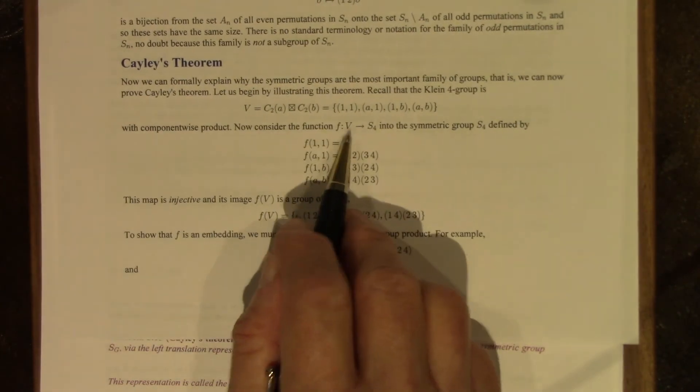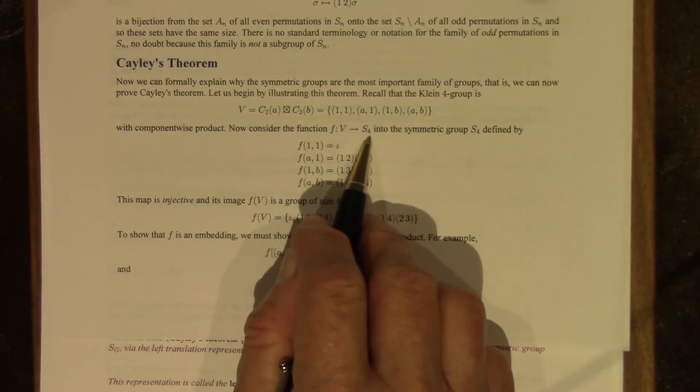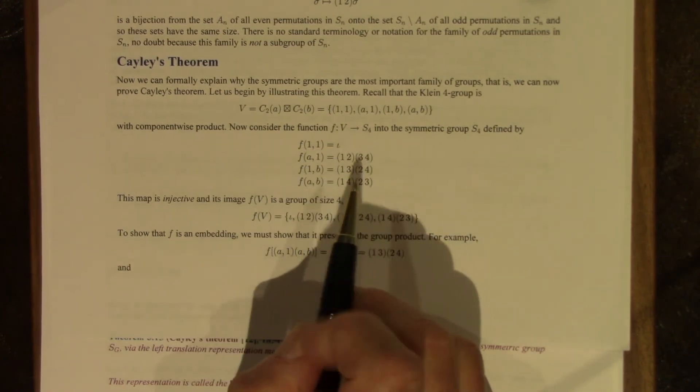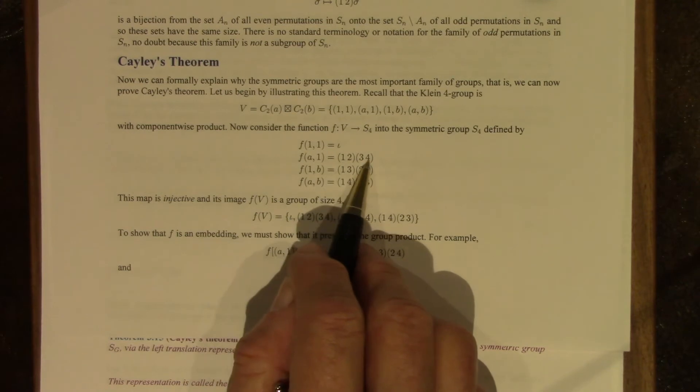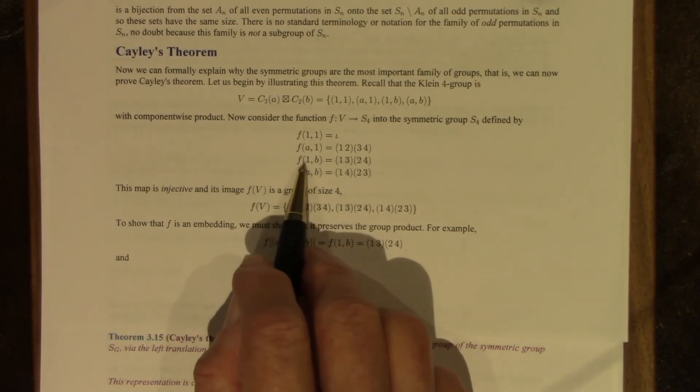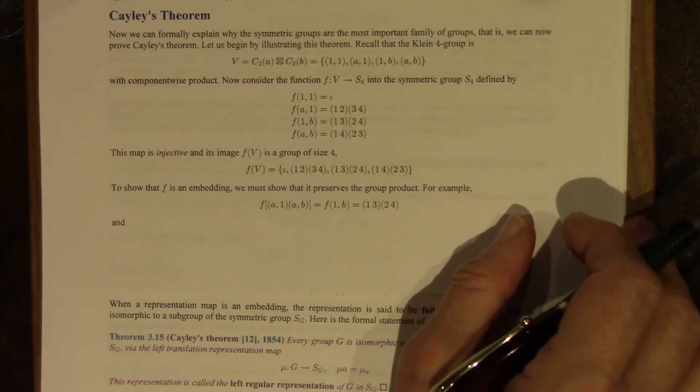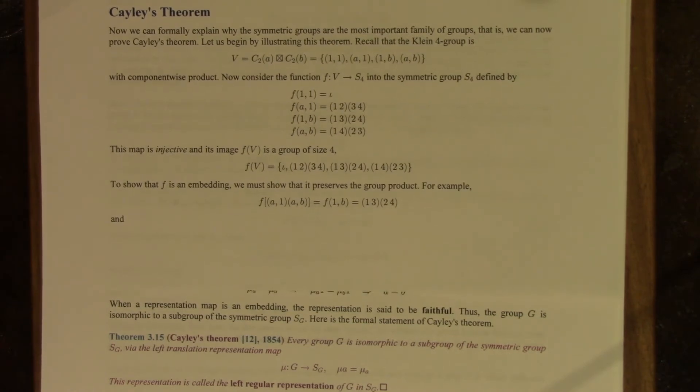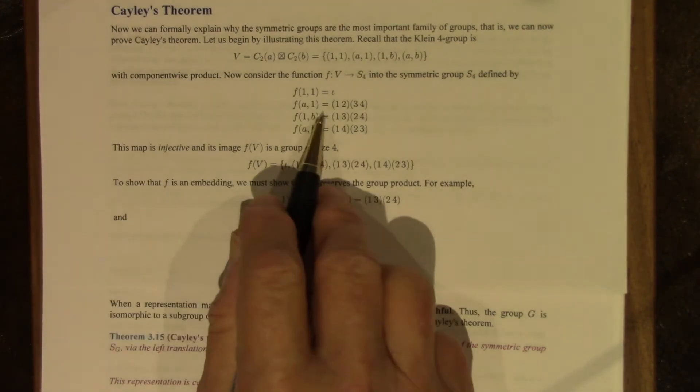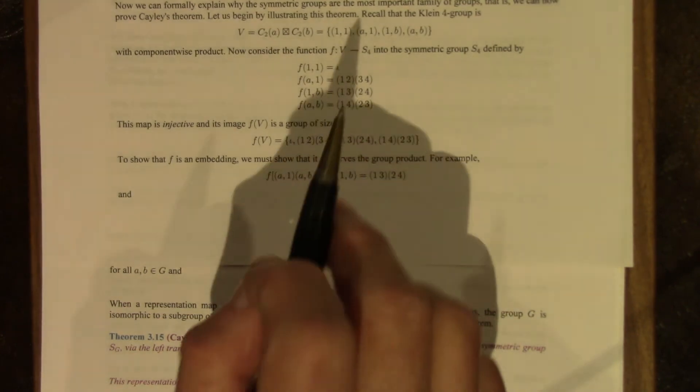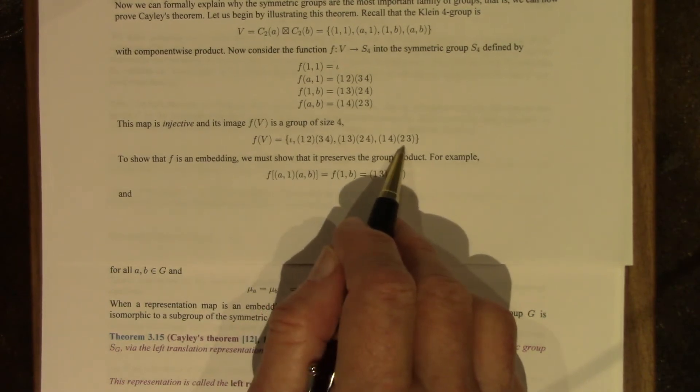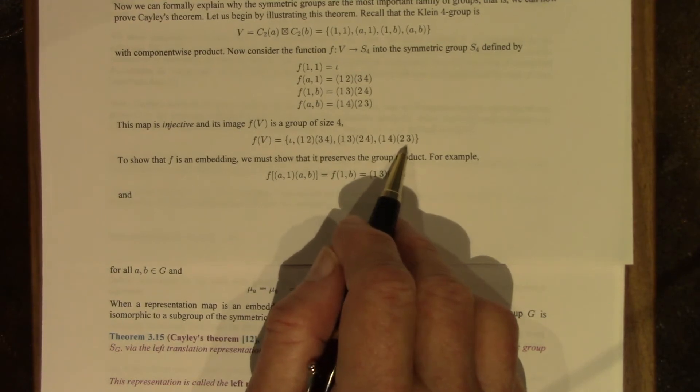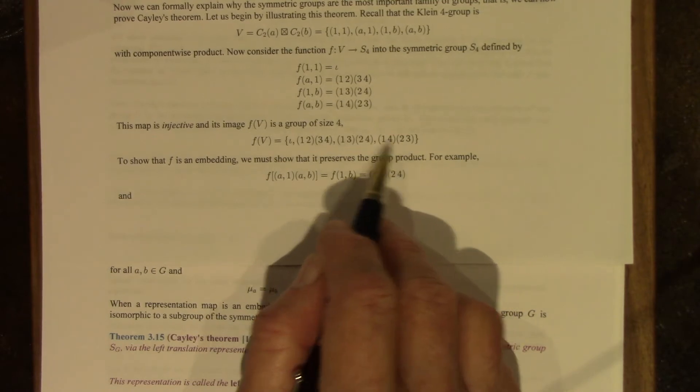However, consider the function that sends the four group into the symmetric group S4. I want it to be a group homomorphism, so I want to send the identity to the identity, and I'm going to send the ordered pair A1 to this product of transpositions, the ordered pair 1B goes here, the ordered pair AB goes here. And actually I left it for an exercise for you to figure out how to read my mind here, how did I come up with this function. This function is injective, that's just easy to see, its image is in fact a group of size four, it's a subgroup of S4. S4 has size 24, but this is a subgroup of size four.